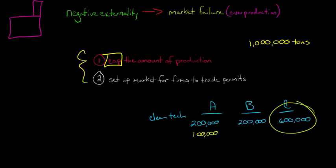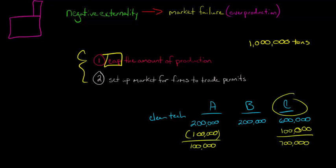Maybe firm C hasn't invested much in technology. And so firm C can say we would like to buy 100,000 of credits, because maybe we think we're going to be at 700,000. So firm C says we will buy credits. Now, you might think that's a bad thing, because now this firm C hasn't done a really good job, and now they're actually emitting more than they were supposed to.